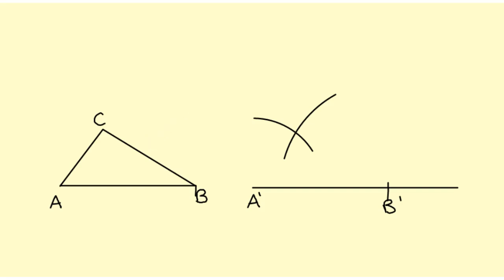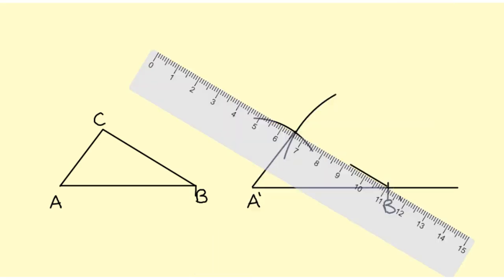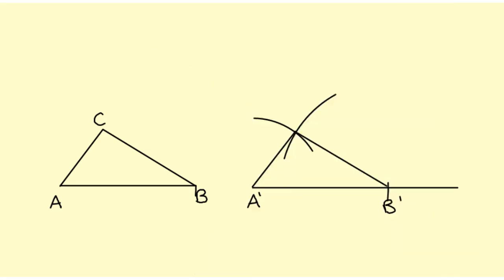So I simply take my straightedge and draw the triangle. We label this point as C', and I have copied triangle ABC.